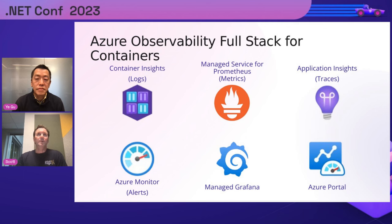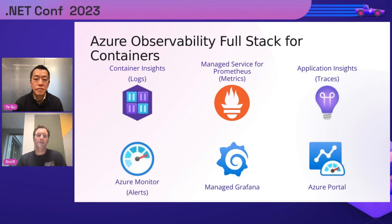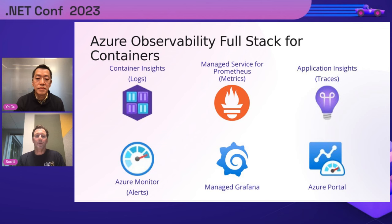Azure Observability has a full stack of tools to monitor this environment. It is our unified cloud-native offering covering the four pillars: for metrics, we have Managed Prometheus; for logs, we have Container Insights with Log Analytics; for alerts, we have the Azure Monitor alerts platform supporting KQL or PromQL rules; for traces, we have Application Insights. Visualization can be done throughout the Azure portal or within Azure Managed Grafana.